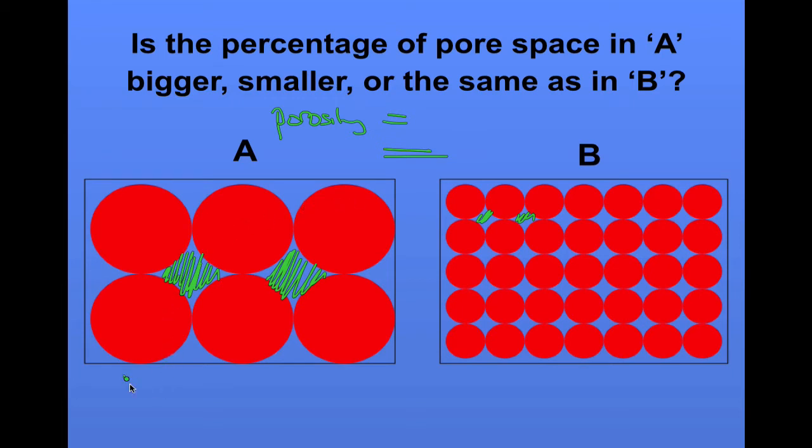Because what we see in A is bigger pores but few. In B we have small pores but a lot of them. When we do the math, the porosity is equal between these two samples. In this instance, it doesn't matter if the particles are bigger or smaller—the porosity will be the same between the two different volumes of sediment.